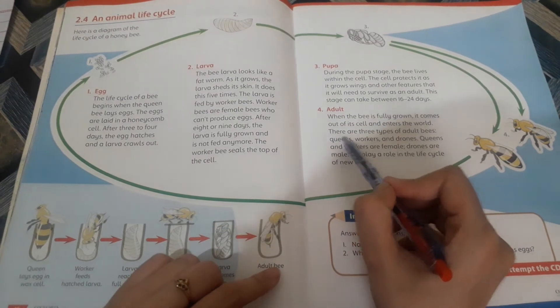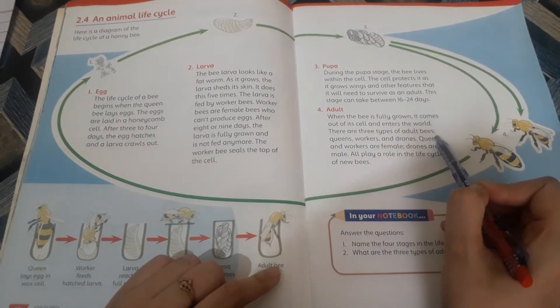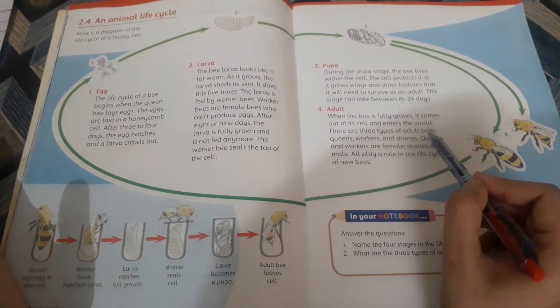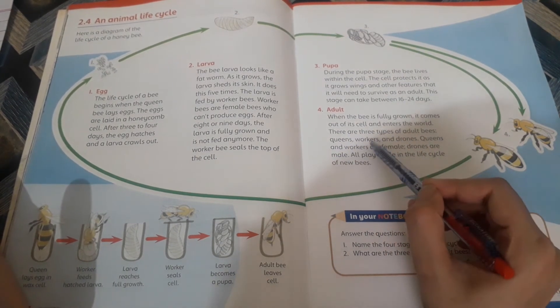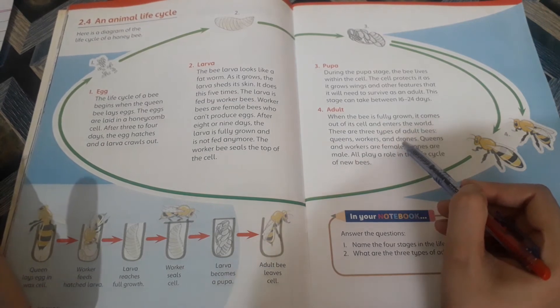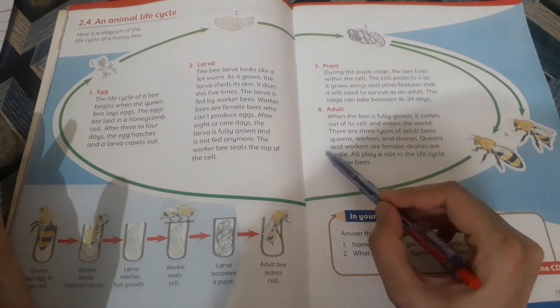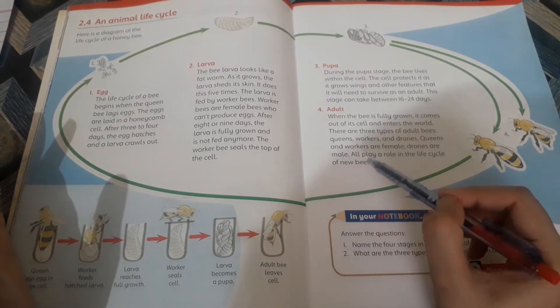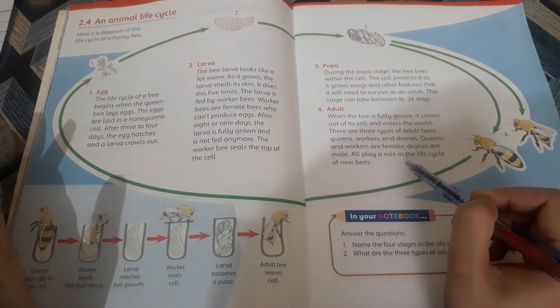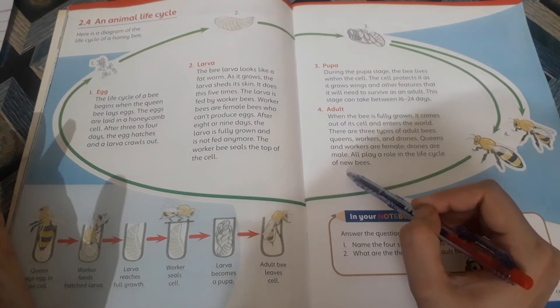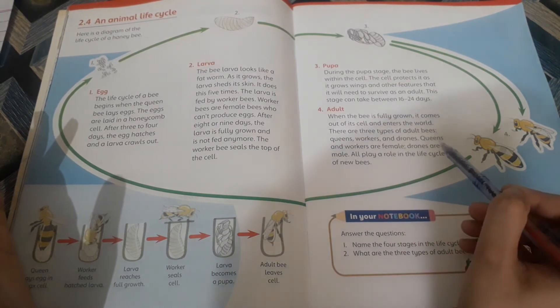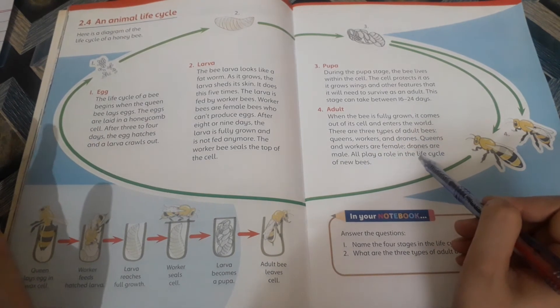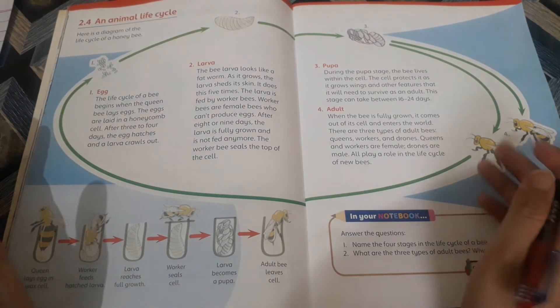There are three types of adult bees: queens, workers, and drones. Queen and worker are female, drones are male. All play a role in the life cycle of new bees. Queen lays the eggs, worker bees feed them, and drones do nothing. They just stay in the honeycomb.